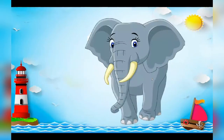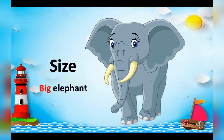Here we have an elephant. The word that describes the size of a noun is also called an adjective. 'Big elephant' — the word 'big' is describing the size of the elephant, so 'big' is an adjective.